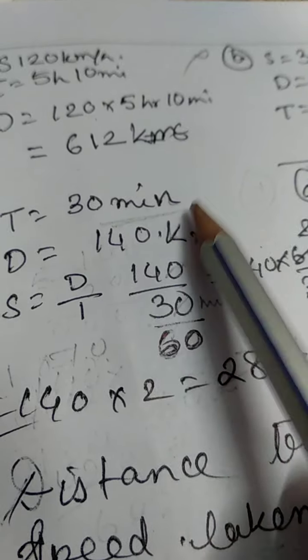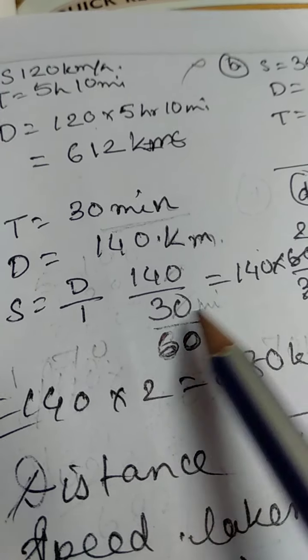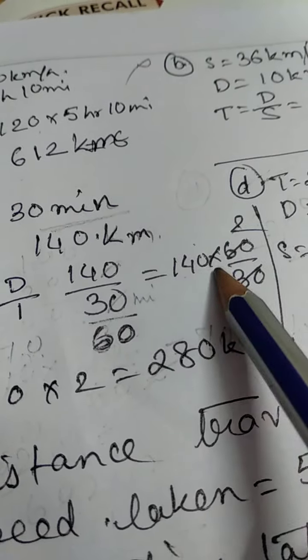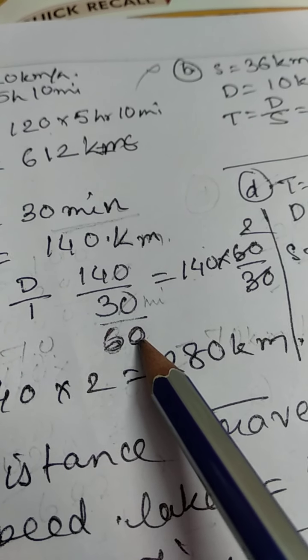It is minutes. So how to convert it into hours, it will be 30 by 60. So if I reverse it, it will be 140 into 60 by 30. Because we cannot do the cutting like this only.